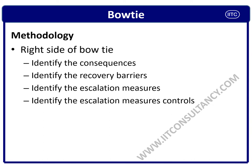Now we will see the right side of the bowtie — the remedial or recovery barriers — in four steps. First, identify the consequence of the major accident hazard. After identifying the consequence, identify the recovery barriers for each accident. Then identify the escalation for each recovery barrier. After identifying the escalation measures, put suitable and sufficient controls so it does not escalate, achieving damage control and reducing post-accident consequences.